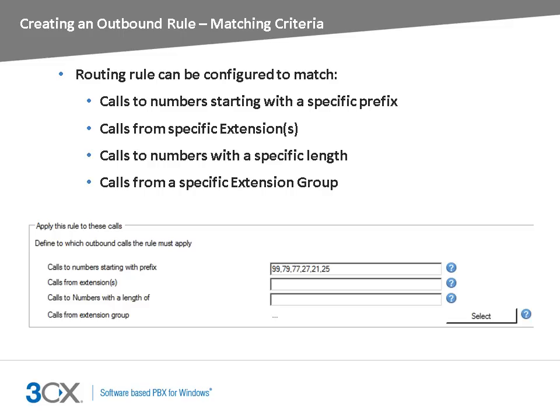When configuring matching criteria based on a prefix, you can define multiple prefixes by separating them with a comma. In addition, you can define multiple consecutive numbers by using a dash.